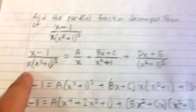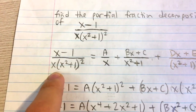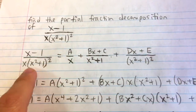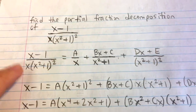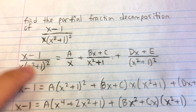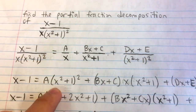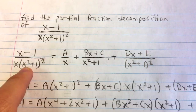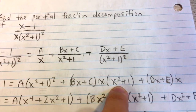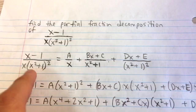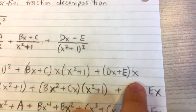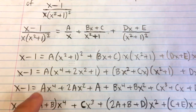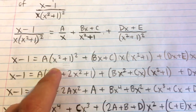Now we have this equation. What we're going to do is multiply by the entire denominator on the left, so we have just x minus 1. On the right side, for the A term, the x cancels out but (x squared plus 1) squared is left over. For the Bx plus C term, one of the (x squared plus 1) factors cancels, leaving x and (x squared plus 1). For the Dx plus E term, (x squared plus 1) squared cancels, leaving just x.